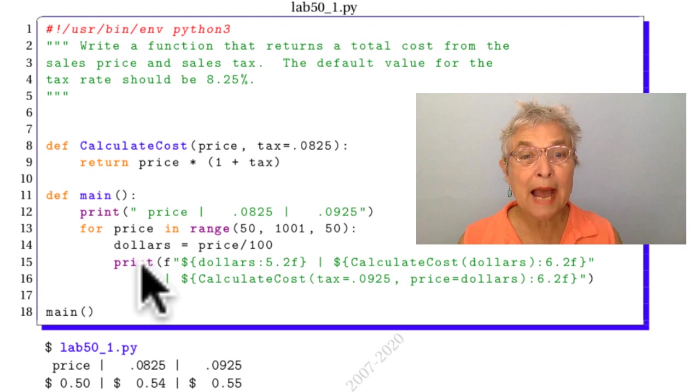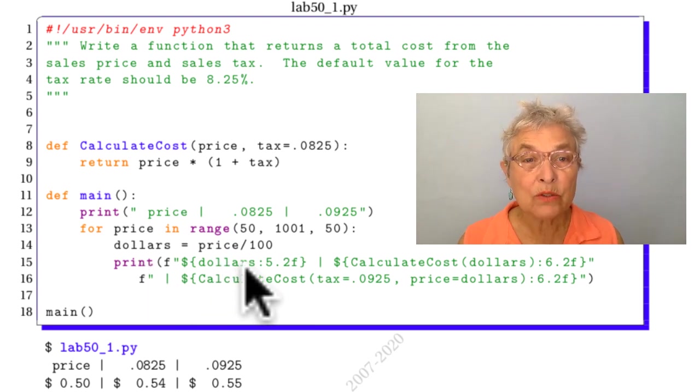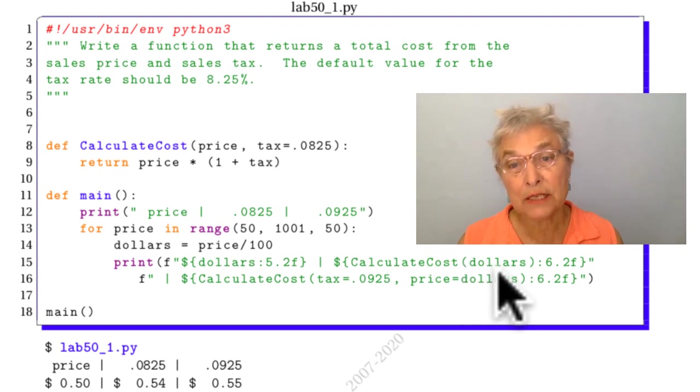We're going to print out what those dollars are in a 5.2 format, and then there's that line that lines up.